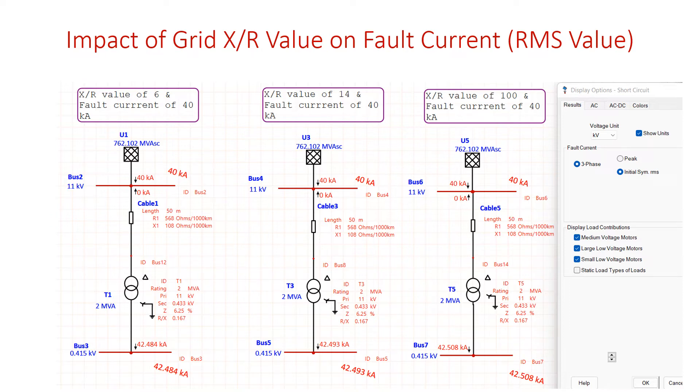Fault is created on bus number 2 as well as bus number 3 where you can see the fault current on bus number 2 is 40 kilo amps and bus number 3 is 42.484. In fact, both these values are initial symmetrical RMS current.